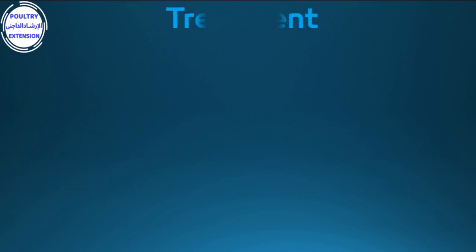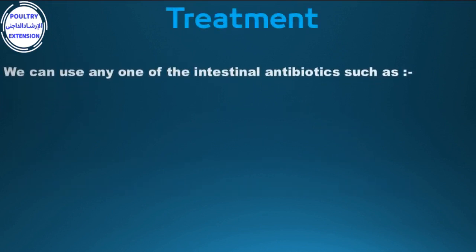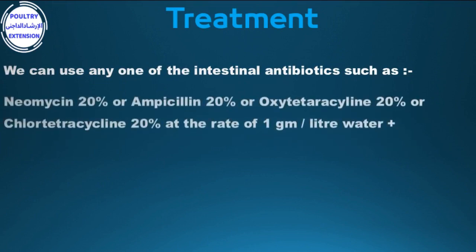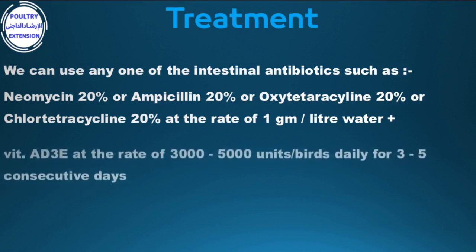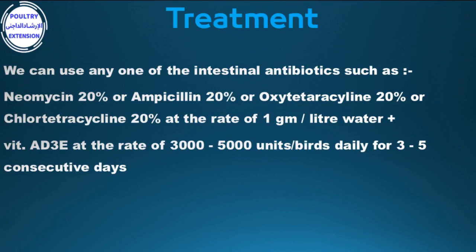Treatment: We can use any one of the following intestinal antibiotics: neomycin 20%, or ampicillin 20%, or oxytetracycline 20%, or chlortetracycline 20%, at the rate of 1 gram per liter of water, plus vitamin A, D3, E at the rate of 3,000 to 5,000 units per bird daily for 3 to 5 consecutive days.